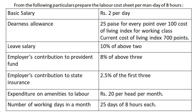Leave salary is 10% of the above two — meaning 10% of basic salary and DNS allowance. The employer's contribution to the state insurance is 2.5% of the first three, meaning basic salary, DNS allowance, and leave salary. Expenditure on amenities to labor is rupees 20 per head per month. The number of working days in a month is 25 days of 8 hours each.